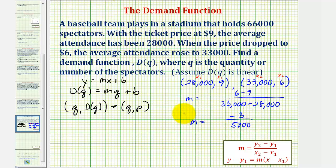So now that we have the slope, we can use this and one of these two points to find the equation in point-slope form, and then solve for y. In our case, solve for D(q).